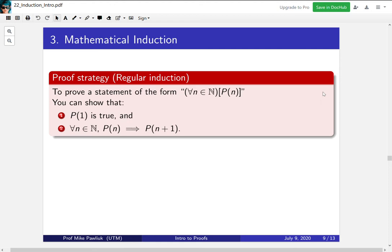We'll start by mentioning what the proof strategy is for regular induction. We'll see a bunch of varieties of this throughout this course. To prove a statement of the form for all n in the naturals P(n) is true, you can show that P(1) is true and for all natural numbers you have an implication P(n) implies P(n+1). That's what you need to do induction.